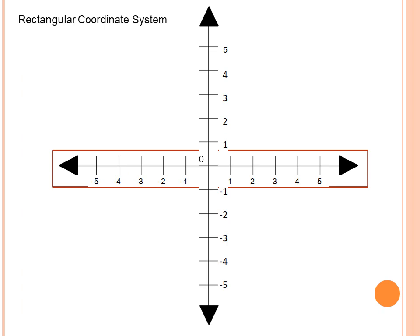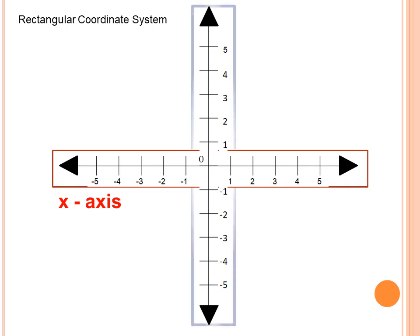Now, this horizontal number line — in the rectangular coordinate system, it is called the x-axis. Don't forget the term; it's very important: x-axis. And the vertical number line is known as the y-axis. These two terms are very important, so don't forget. To identify which is which, we label them with the letters x and y.